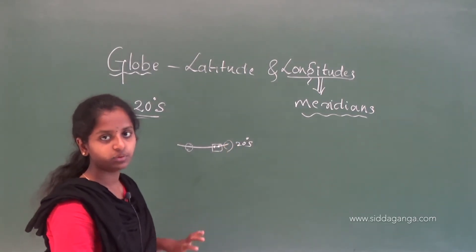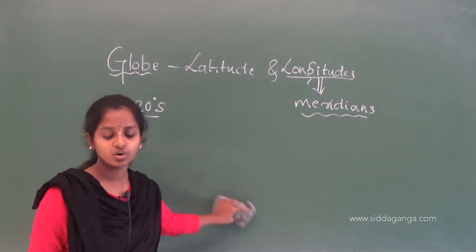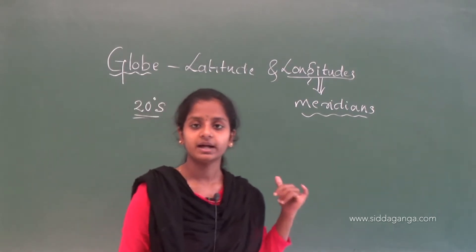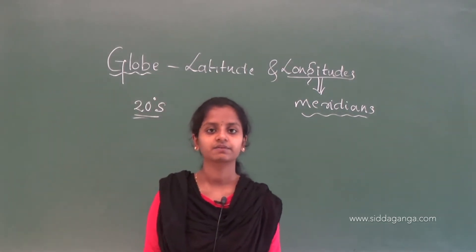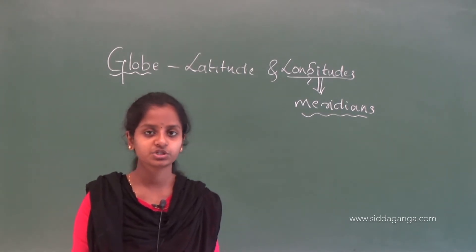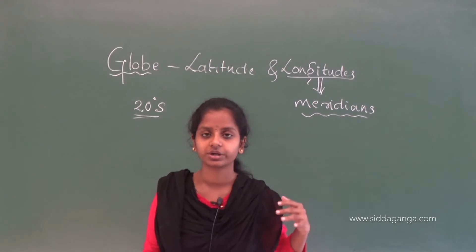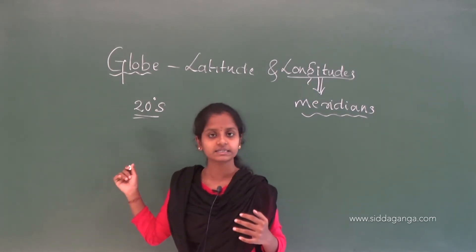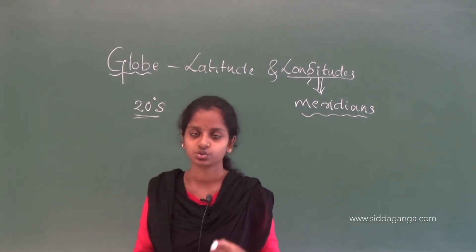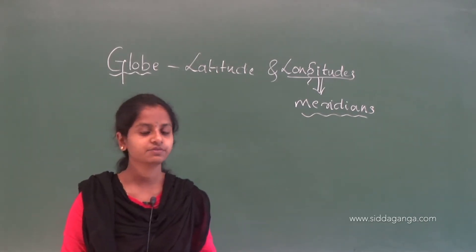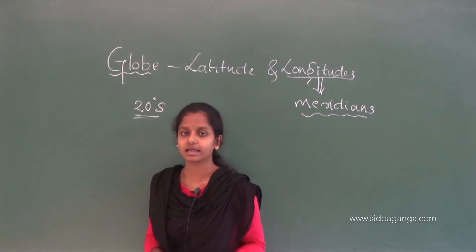In order to know the direction in which these places are situated clearly, we need the longitude. If we know the longitude, we can easily locate any place on the Earth's surface. So to locate any surface, we need both the longitude and the latitude.